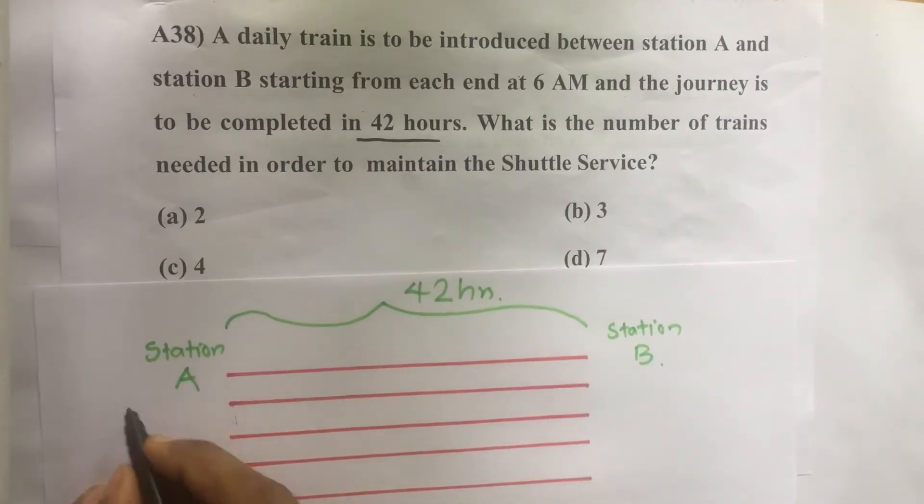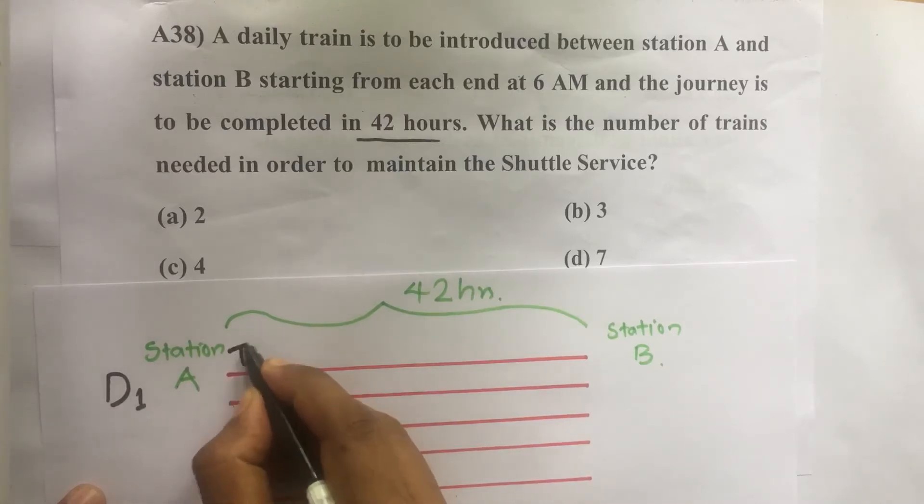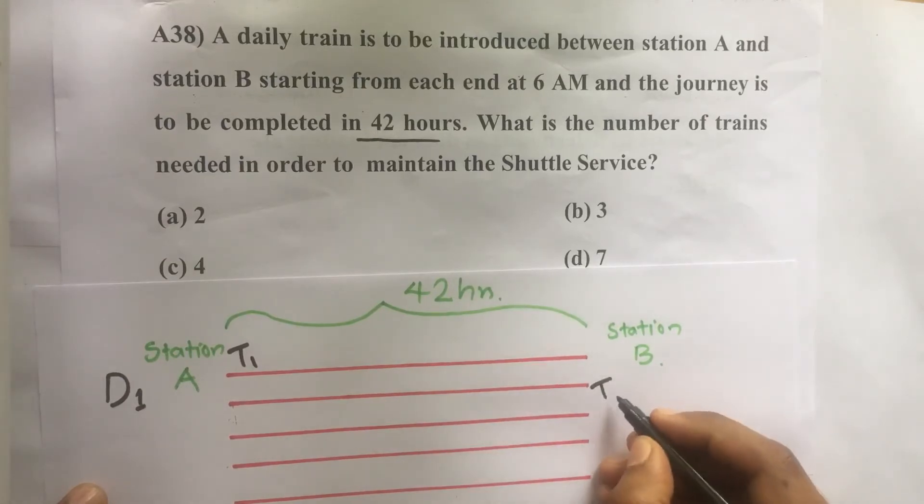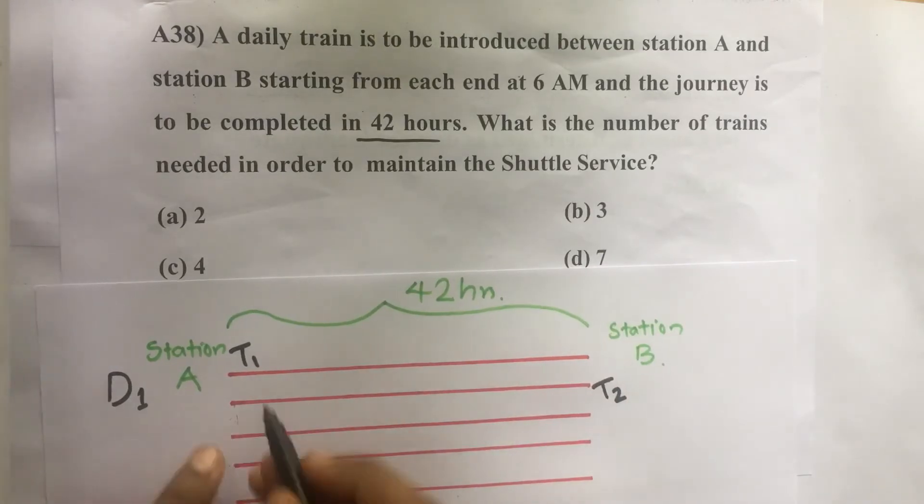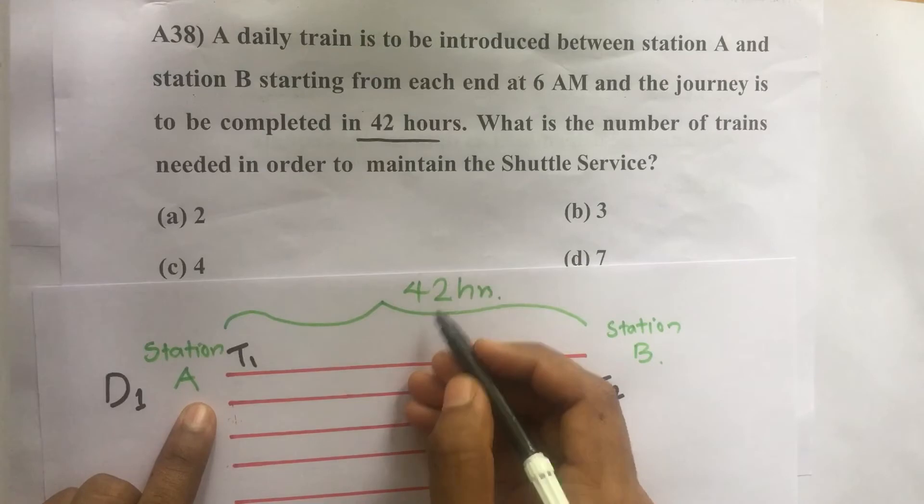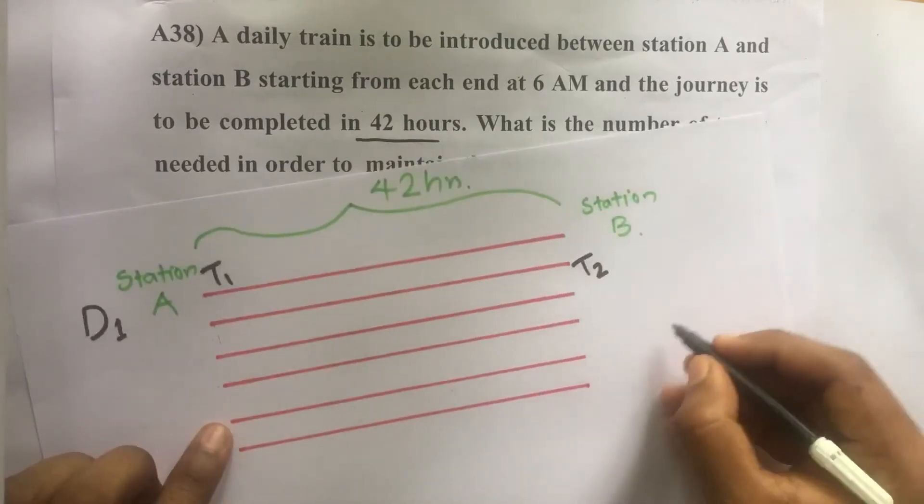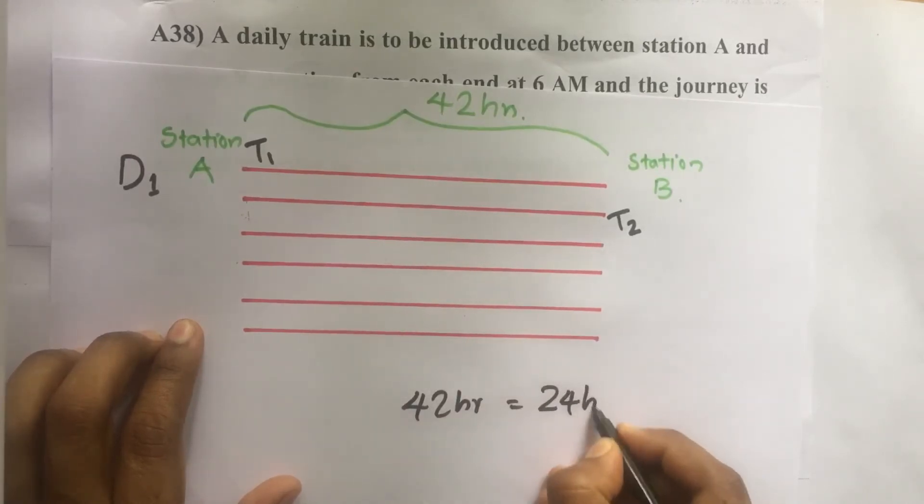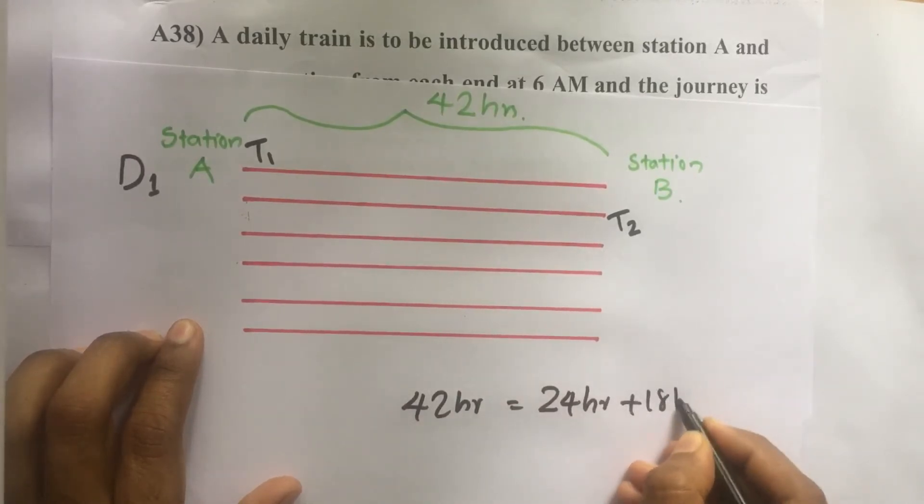So on day one we are introducing a train at station A and also we have to introduce another train the same day. So we need one more train at station B. Then to reach A to B it takes 42 hours. That means 42 hours equals 24 hours plus 18 hours, one day plus 18 hours.